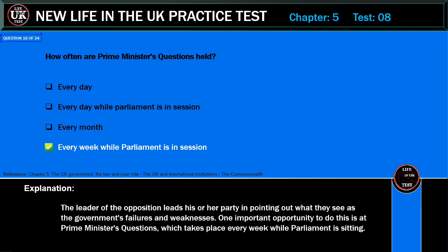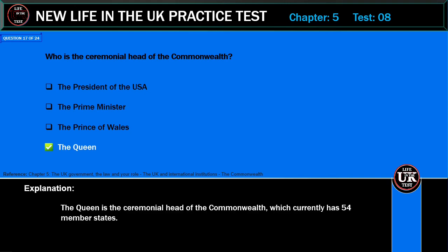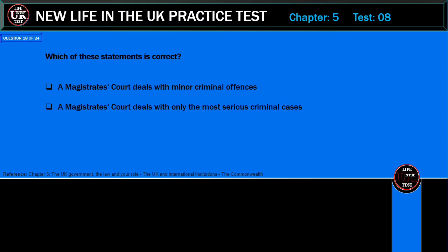Who is the ceremonial head of the Commonwealth? The President of the USA, the Prime Minister, the Prince of Wales, or the Queen? Correct answer: the Queen. Explanation: The Queen is the ceremonial head of the Commonwealth, which currently has 54 member states.